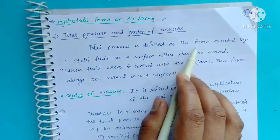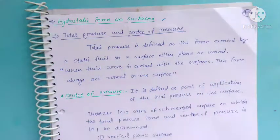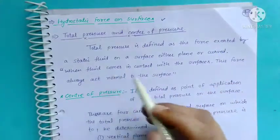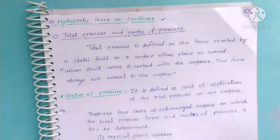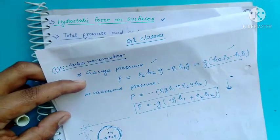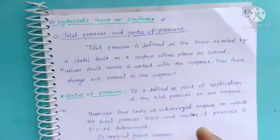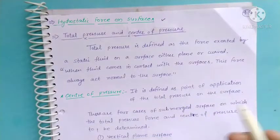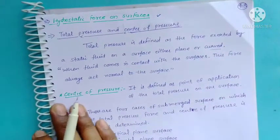Total pressure force is defined as the force exerted by a static fluid on a surface. When fluid comes in contact with a surface, this force always acts normal to the surface — यानि 90 degree पर। Center of pressure वह point है जहाँ total pressure acts on the surface।